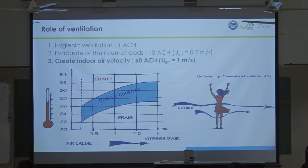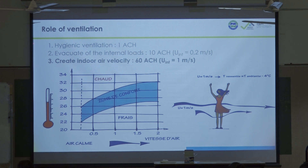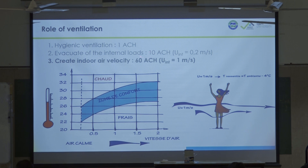This slide is very important — we will focus on steps two and three. For an air-conditioned building you need to renew the air at least one volume per hour — this is called one air change rate per hour. The second effect of ventilation is to release the internal loads, release the heat inside the building; in that case you need 10 air change rates per hour, and this generates an air velocity inside of 0.2 meters per second.